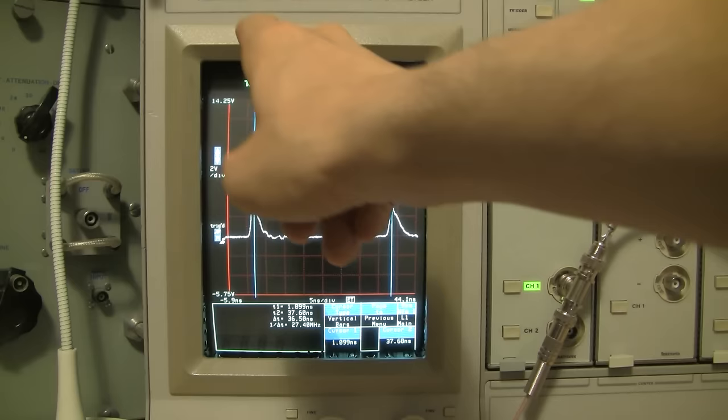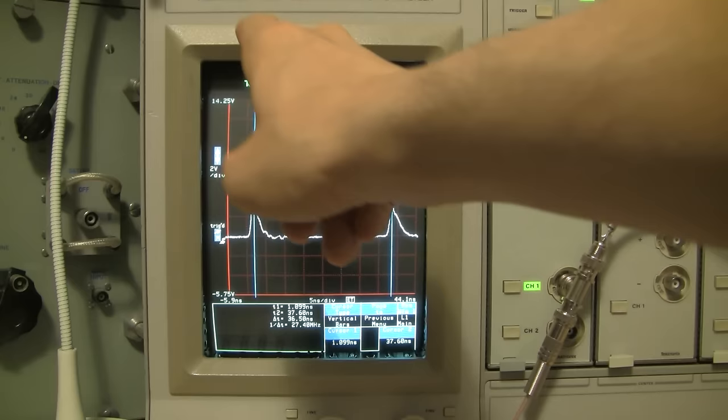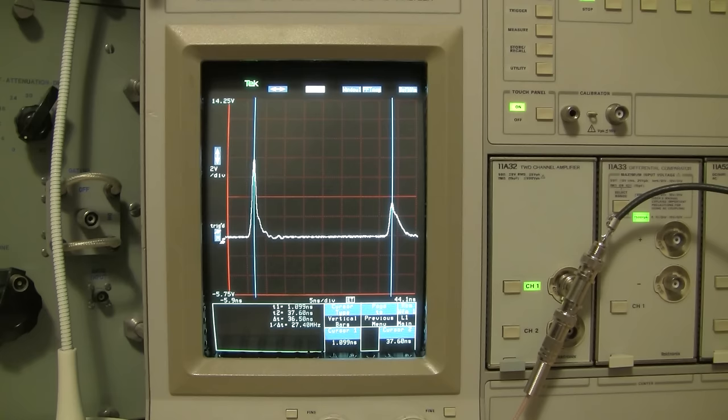So that's the time it's taking for the signal to go come down here reflect and come back up. So that's the second figure we need to write down on the piece of paper. We have 172 inches to write down. And we have 36.5 nanoseconds is what we want to write down next. When I come back here with a piece of paper in front of the camera I'll show you how to calculate the velocity factor with those two figures.